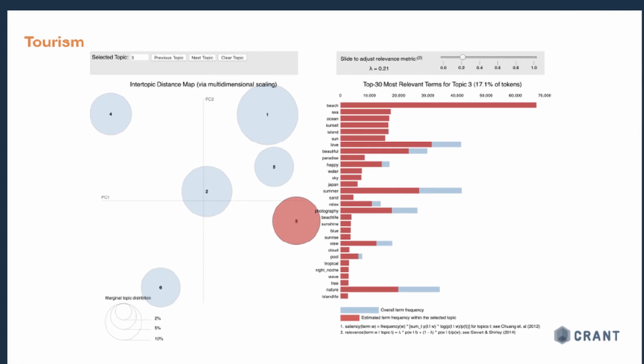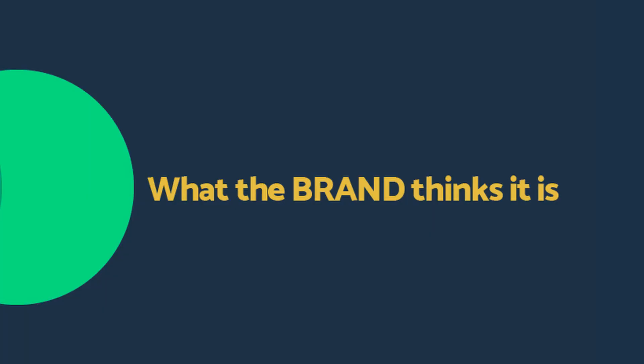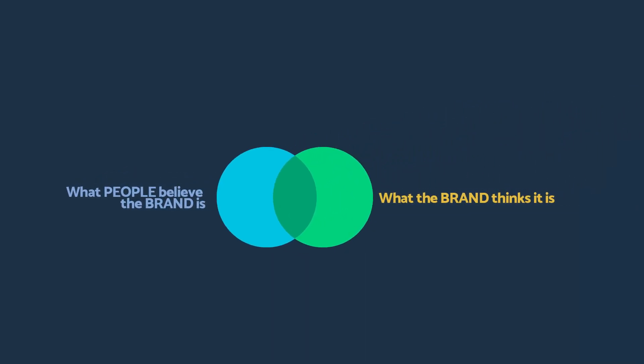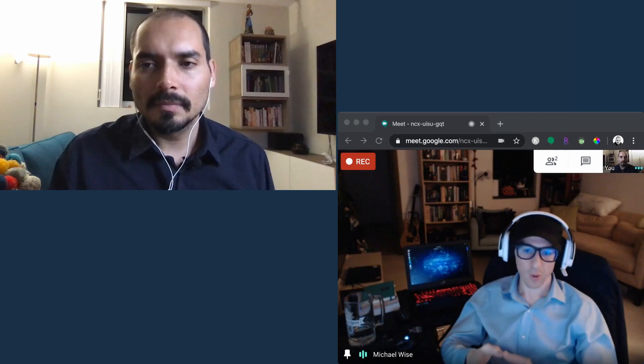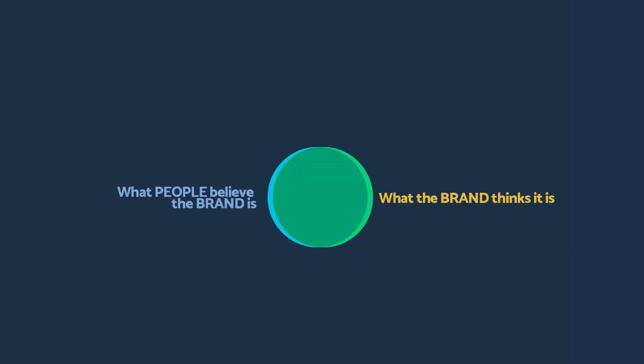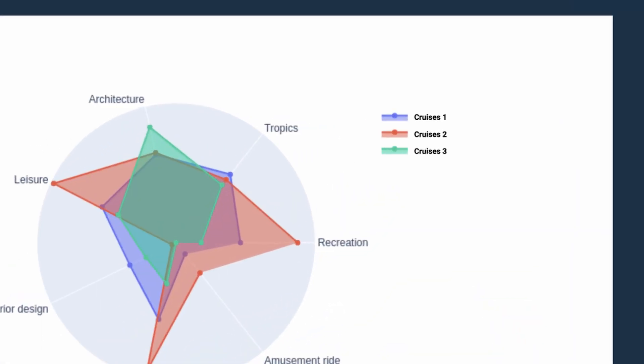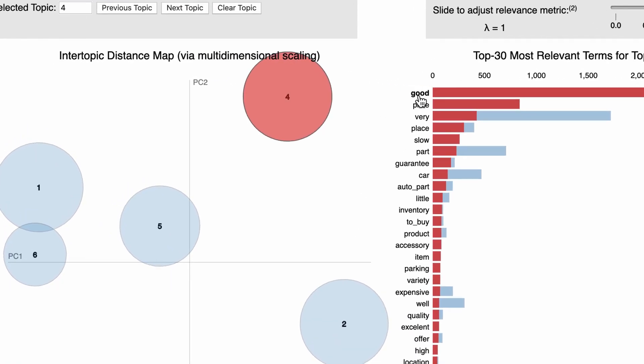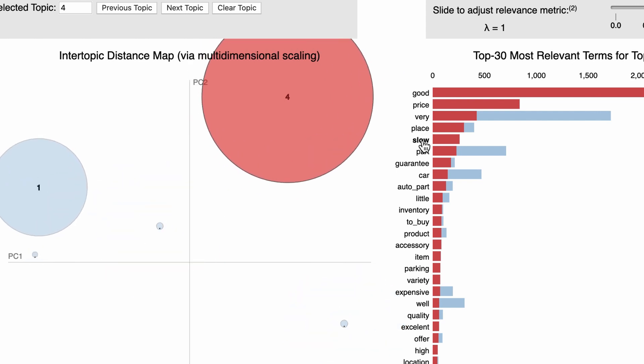A brand has an image it wants to portray — saying 'this is what we are, believe us' — but that's not always aligned with what people actually think. People write reviews saying something that doesn't align with the brand's own narrative. If you have a powerful brand and good strategy, your brand image can be reinforced by what people are saying. By analyzing the conversation people are having, you can find territories you want to own but don't currently — and LDA can help you build the roadmap to get to that territory.